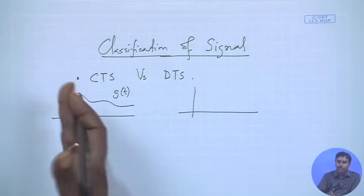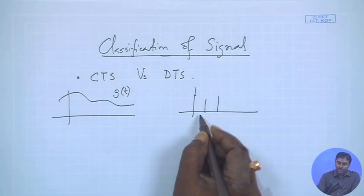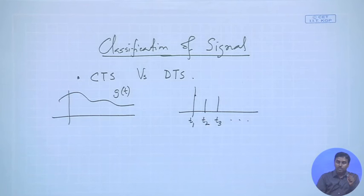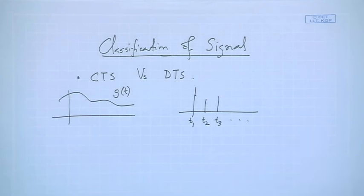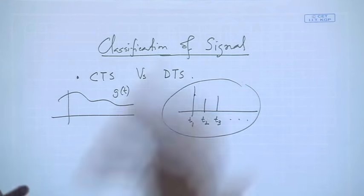Instead of continuous time, if we sample the signal at different locations — say at times t1, t2, t3 — the signal is only defined at those instants and has no definition in between. This is called a discrete-time signal. We will encounter this when we do sampling of signals later on. A continuous-time signal is defined at every time instance within the considered interval.